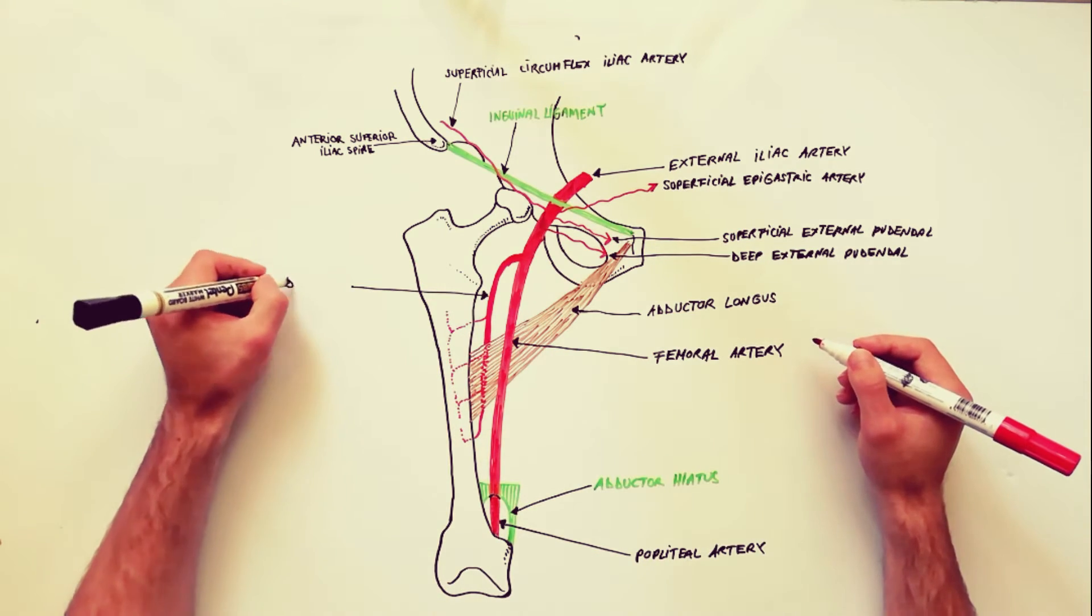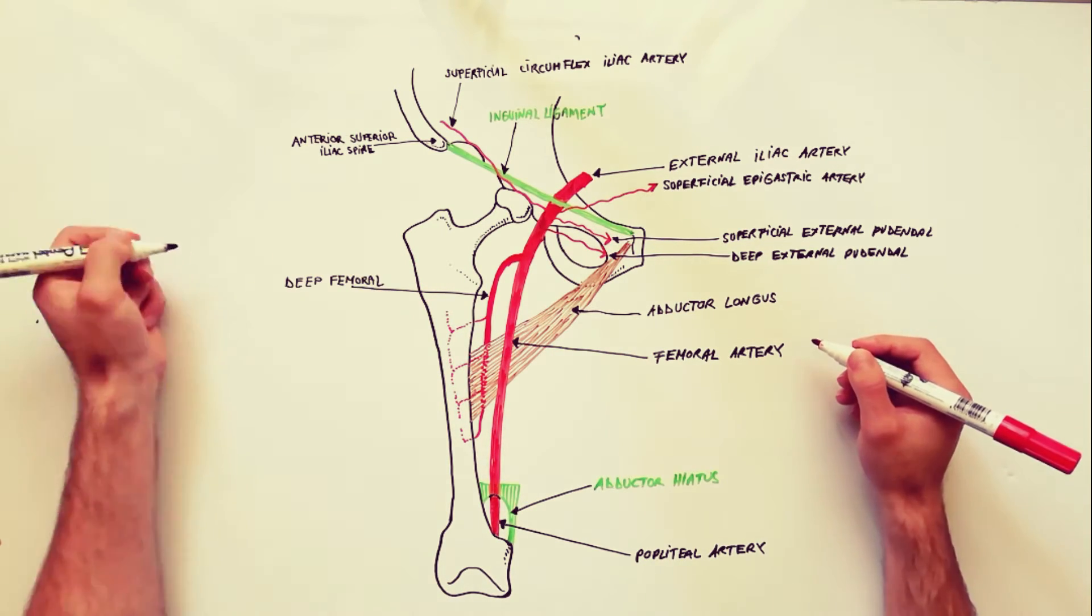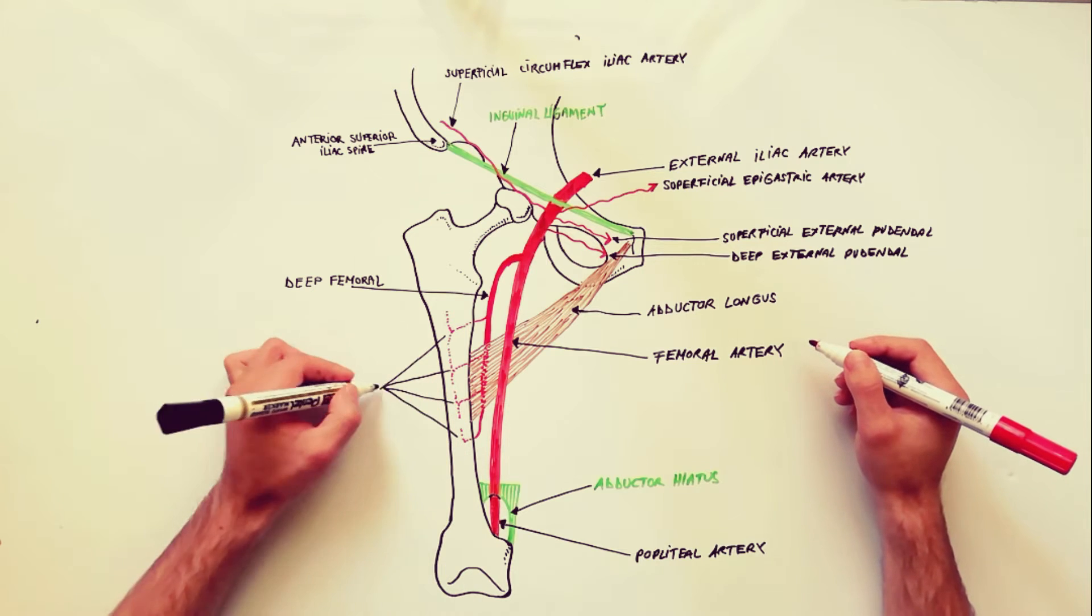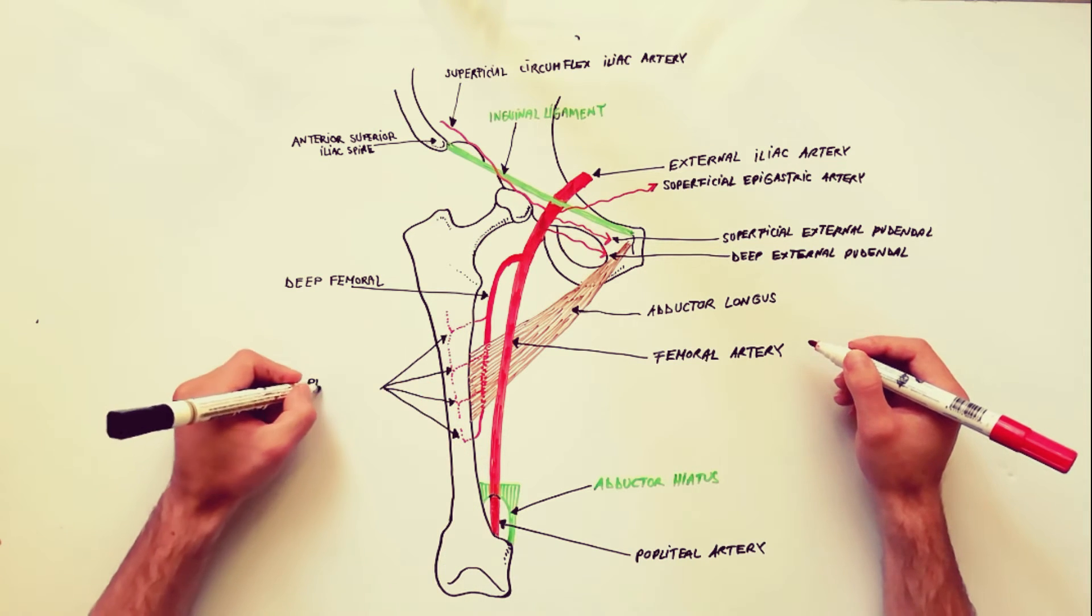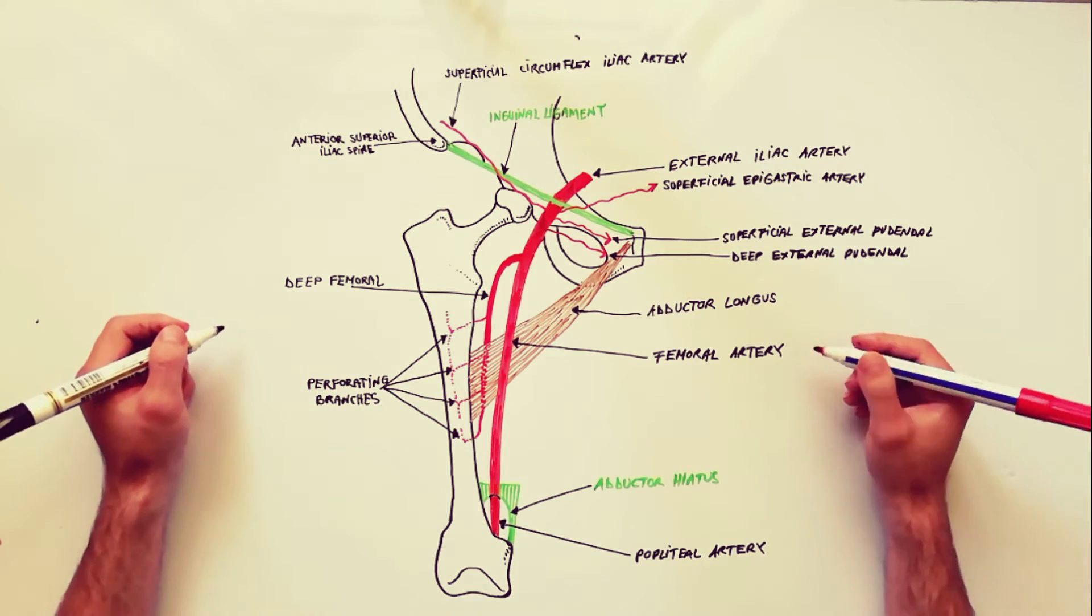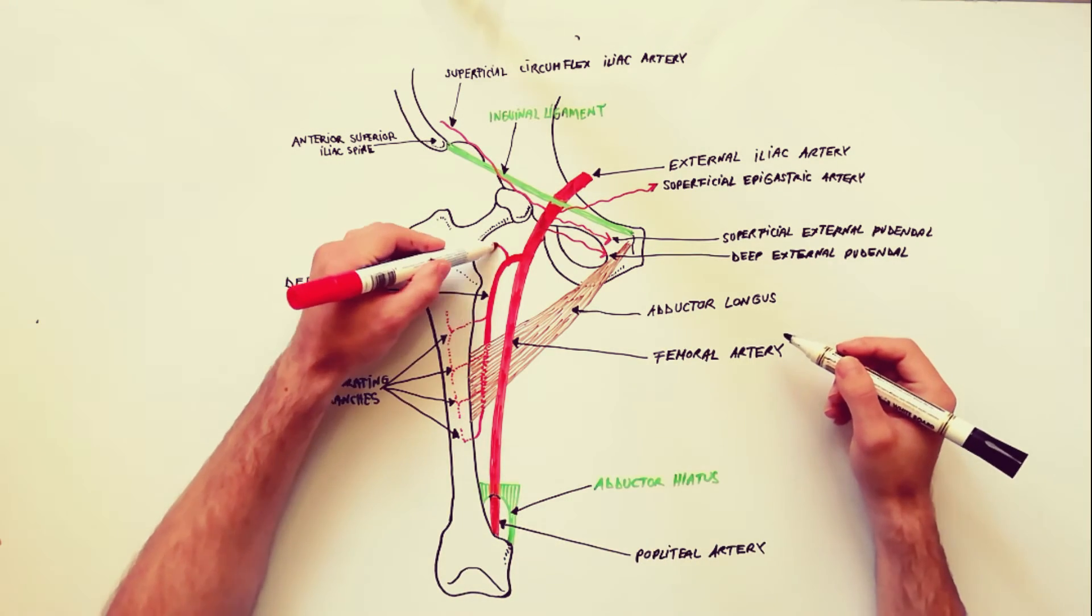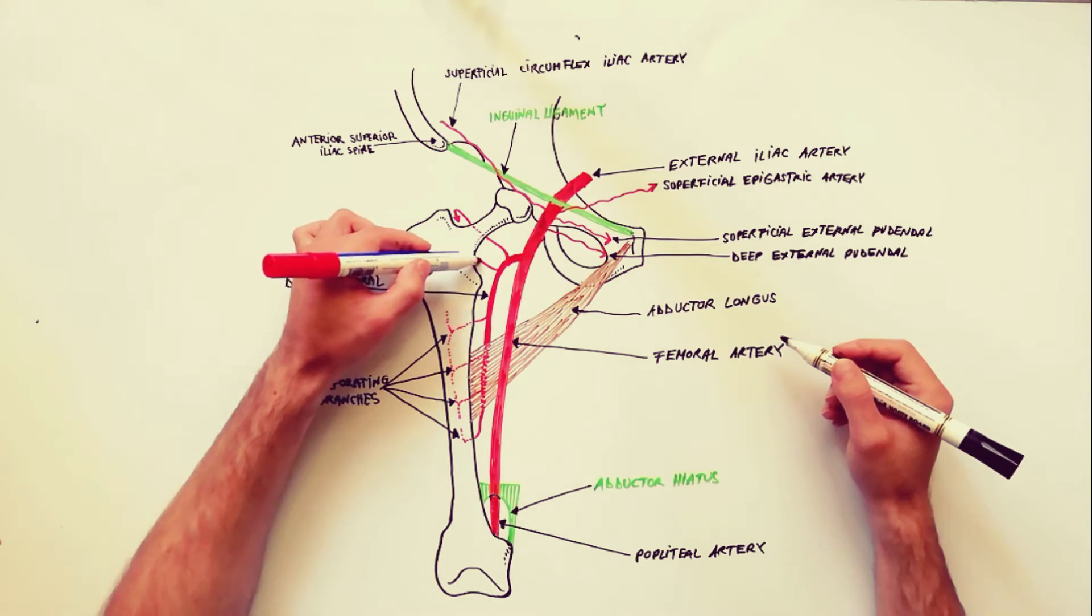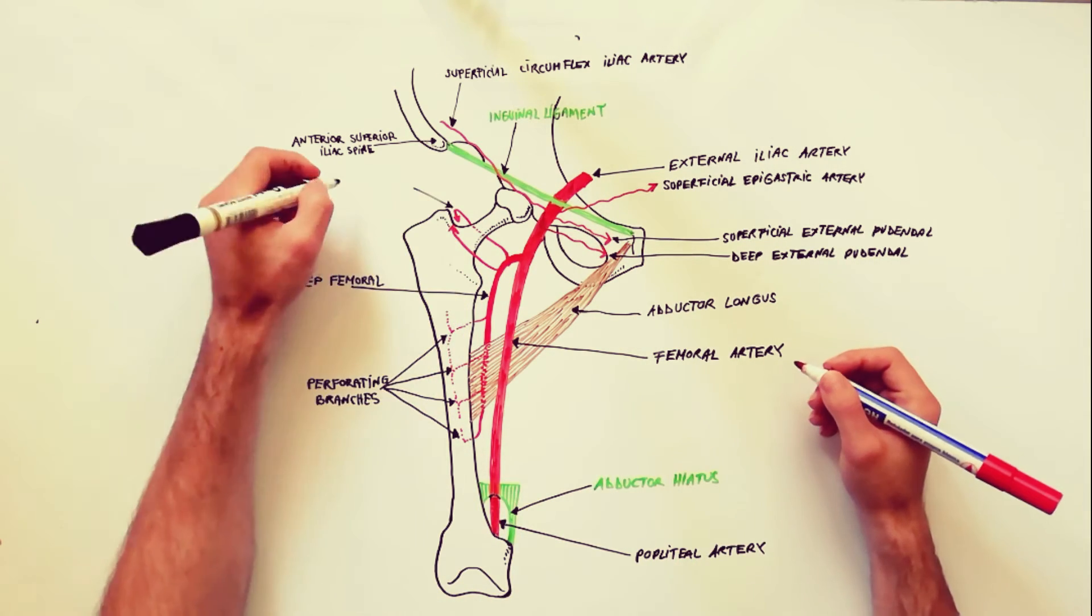The deep femoral artery passes deep to the adductor longus muscle and during its course gives off three perforating branches and ends by becoming the fourth perforating branch. Those perforating branches will perforate the adductor magnus muscle.